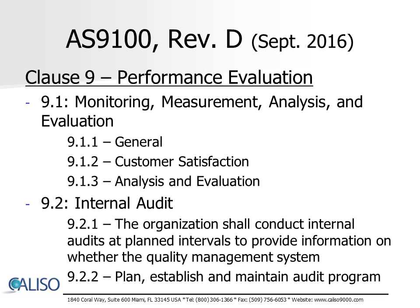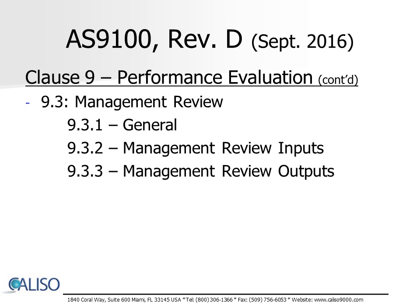Clause 9 of the standard focuses on performance evaluation. This clause requires that an organization determines the elements of their system that need to be monitored, measured, analyzed, and evaluated, as well as implementation of an internal audit program. Clause 9 also identifies the requirement for management review. This includes requirements for planning and carrying out a management review, as well as the expected outputs of the management review, such as opportunities for improvement, any need for changes to the quality management system, and any resource needs.